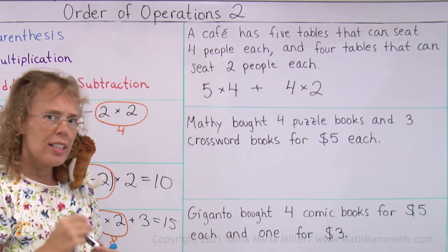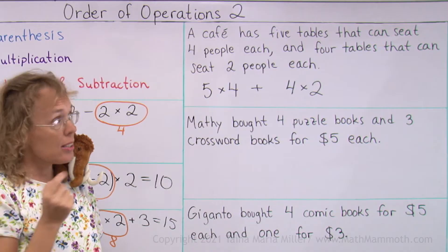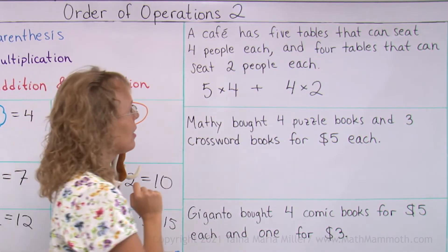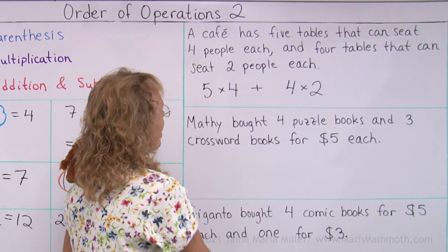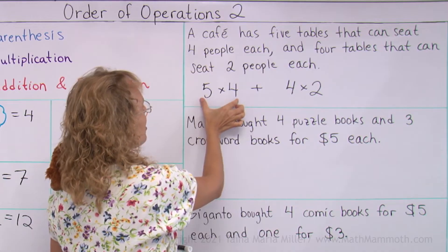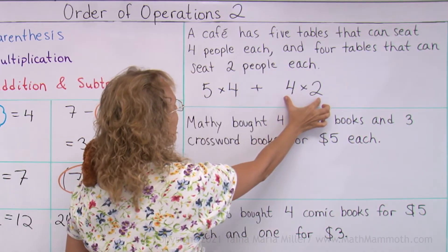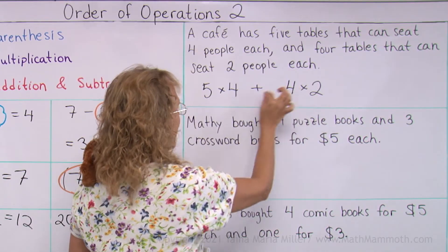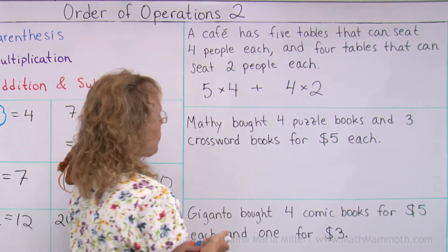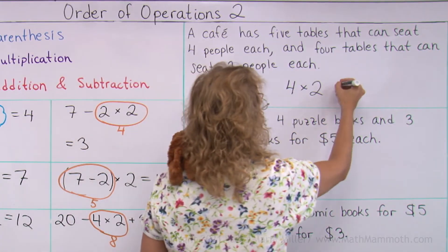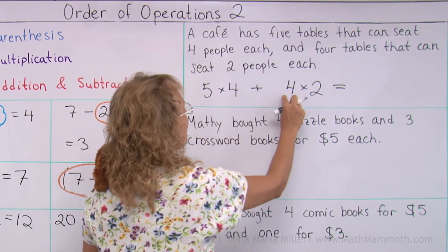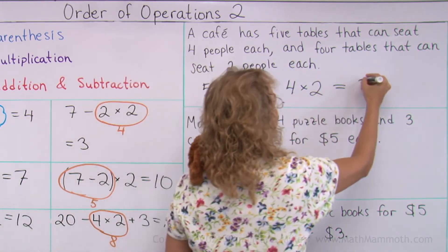Do I need any parentheses in this one? I want to multiply first, multiply this, and then lastly add. So I don't need any parentheses. This is 20, this is 8 — 28.